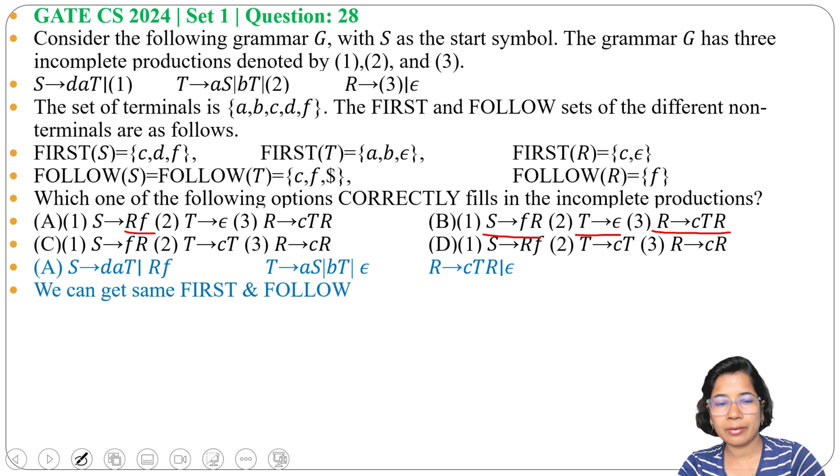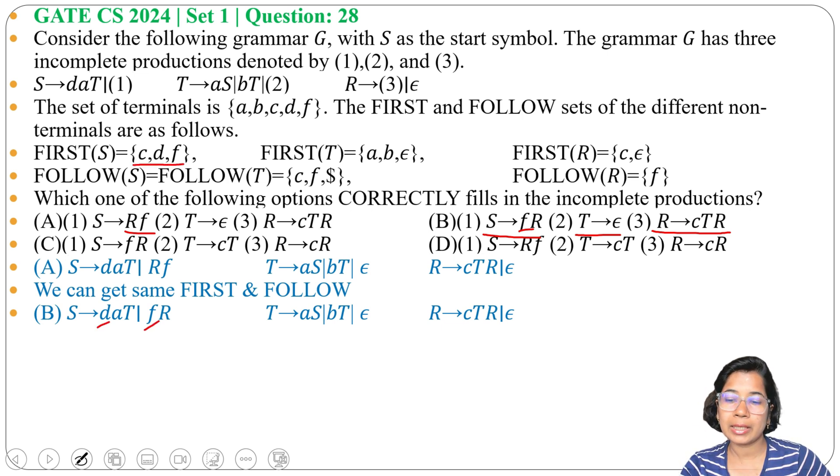Before it was RF. Now it is FR. So first of S will be D and F. Here what is CTF. But here we are just getting D and F. Both are not same. First of S are different. So option B cannot be the answer.